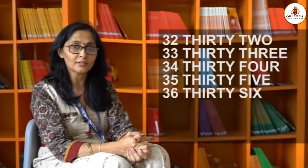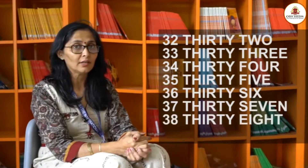Now what is the spelling of 30? T-H-I-R-T-Y — THIRTY. Now can you make the spelling of 31? 30 and 1 — THIRTY ONE — 31. Similarly you can make the spellings of 32, 33, 34, 35, 36, 37, 38 and 39.